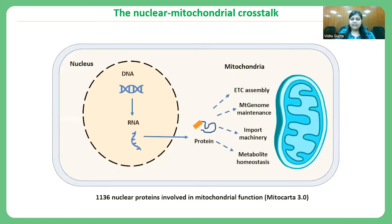There is a very good nuclear-mitochondrial crosstalk that occurs inside a cell, which allows mitochondria to perform the majority of its tasks. MitoCarta, a database of all the nuclear proteins going into the mitochondria, has reported that there are more than 1,000 proteins going from the nucleus to mitochondria to allow mitochondria to perform its function — hence it is a semi-autonomous organelle.